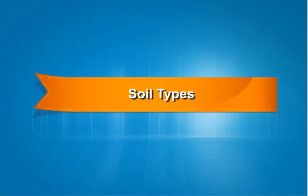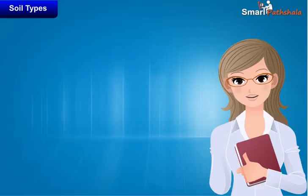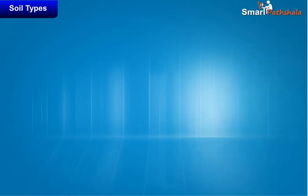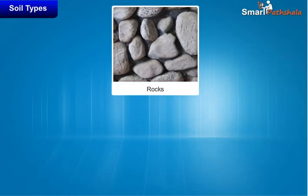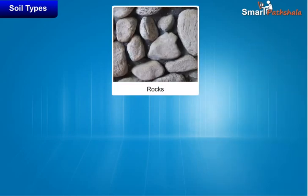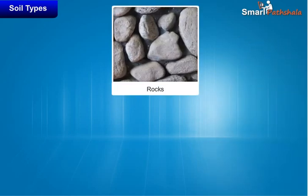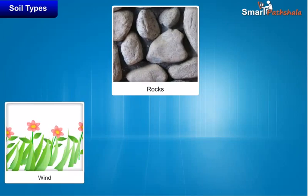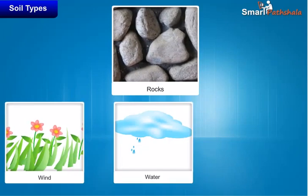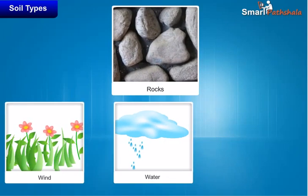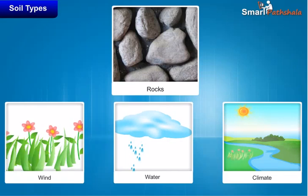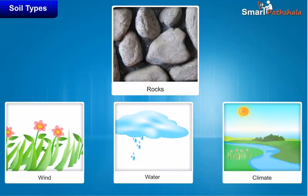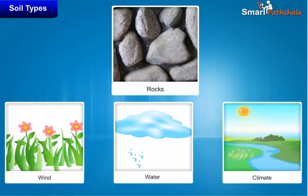Soil Types. In this module, let us know about the types of soil. As we already discussed, soil is formed by the breaking down of rocks by the action of wind, water, and climate. This process is called weathering.